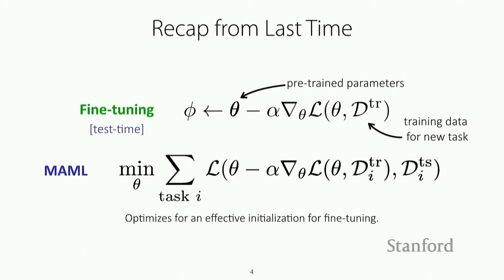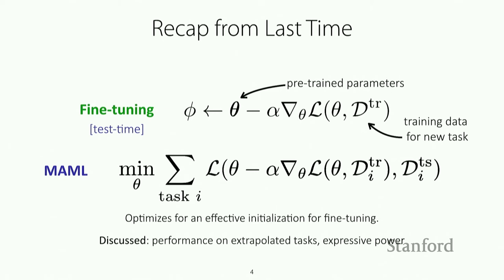We also discussed how well MAML performs on extrapolated tasks, and found that it works quite well in comparison to black box adaptation approaches. We also looked at the expressive power and showed that the expressive power of these algorithms is quite substantial if you have a deep enough neural network, and requires a bit more expressive power of the architecture in comparison to black box approaches.